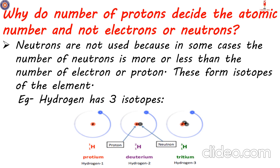In all three isotopes the number of neutrons is different — they have different masses — but they are all hydrogen. So if we were to differentiate elements based on the number of neutrons, we would say these three isotopes were different elements, but that is not the case. That is why neutrons are not used for atomic number. Having eliminated neutrons, what about electrons? The number of electrons is the same as the number of protons when the atom is in a balanced state, but the problem is that electrons can be very easily removed or added, as they are very light and away from the nucleus.